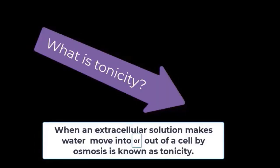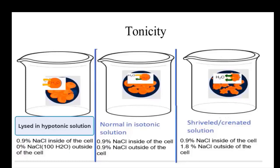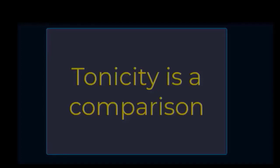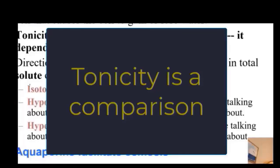Tonicity is when an extracellular solution makes water move into or out of a cell by osmosis — that is known as tonicity. For understanding tonicity, you need to learn it through examples. For example, red blood cells are immersed in three different solutions with different NaCl or solute concentrations. Keep in mind that tonicity is a comparison.